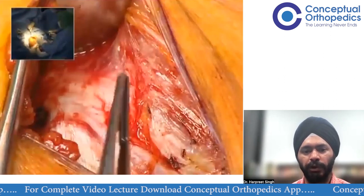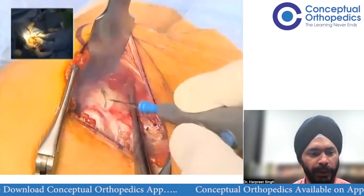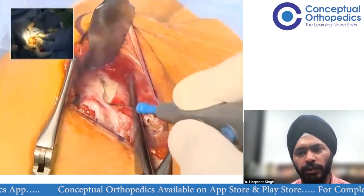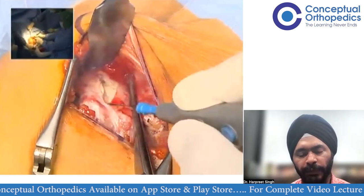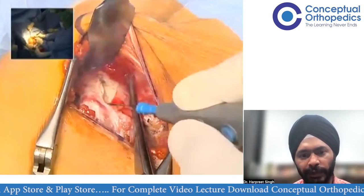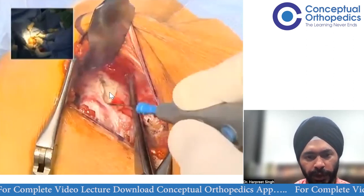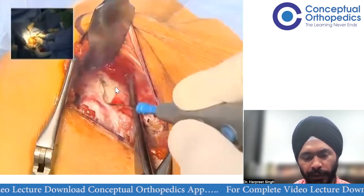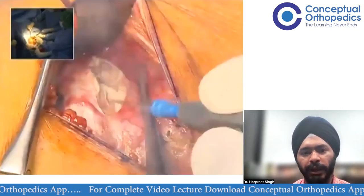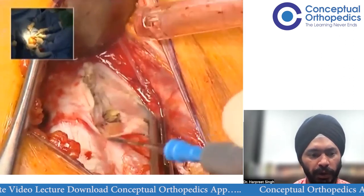Going more medially now, you want to find the interval between the conjoint tendon and the pec minor. On the medial side, removing the superficial soft tissue, you usually find a cleavage of fat that separates the conjoint tendon — going straight down — from the pec minor going medially. Dissect in that fat plane and remove the pec minor from the coracoid process.